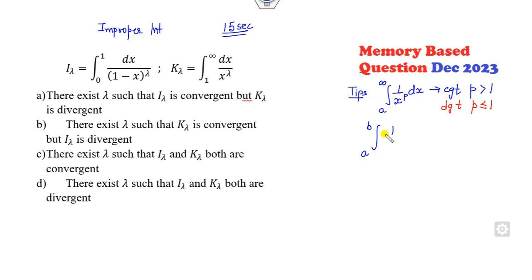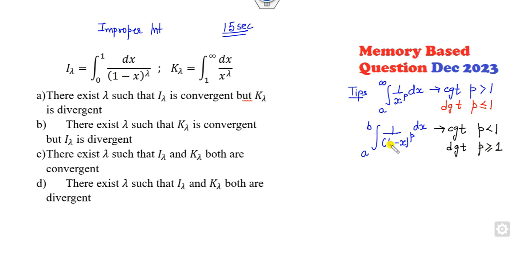On the other hand, when you have the integral from a to b of 1 over (b minus x) raised to power p, this is convergent when p is less than 1, and divergent when p is greater than or equal to 1. So clearly, b is 1 here, which means this is convergent when lambda is less than 1, and convergent when lambda is greater than 1. Definitely both can never be convergent at the same time, so there is no lambda for which both are convergent — that is a wrong option.